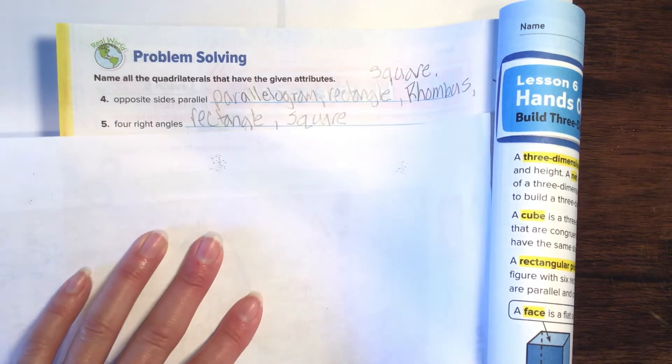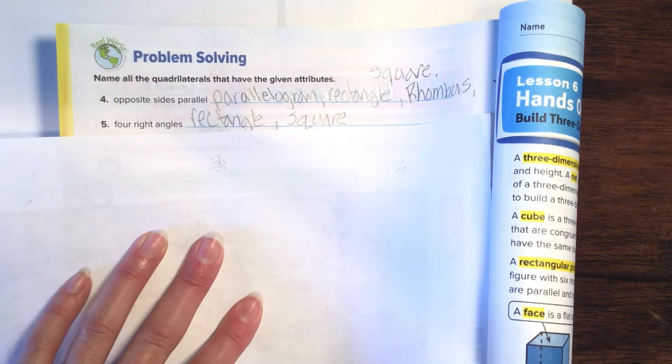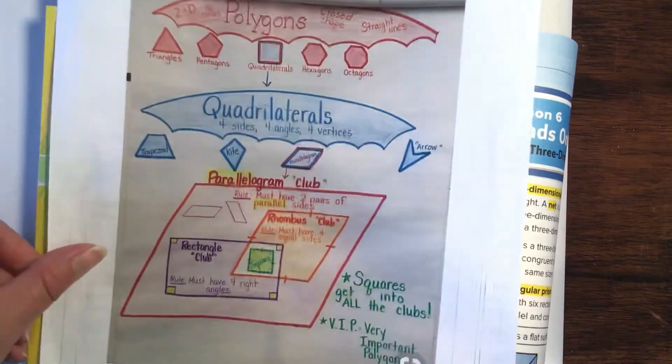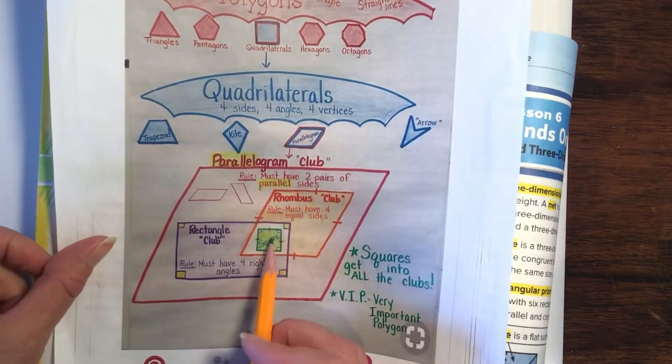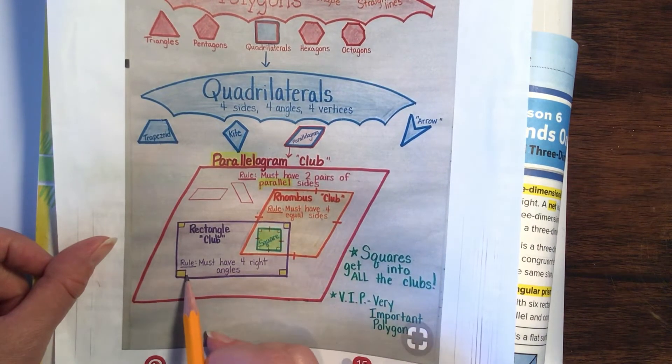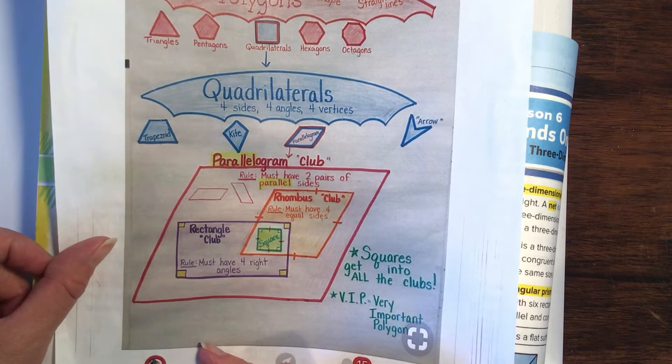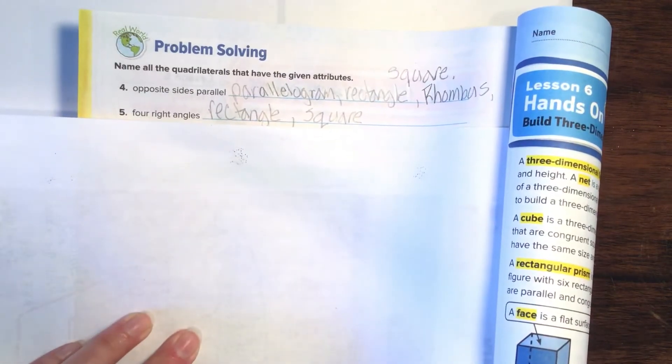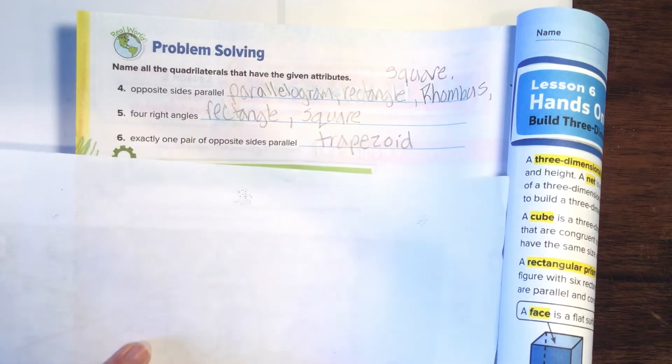Number four, five. We need to decide which ones have right angles. We discussed this with the last question. Out of these shapes, the square has the right angles and the rectangle has the right angles. They're the only ones. So you're going to write rectangle and square.